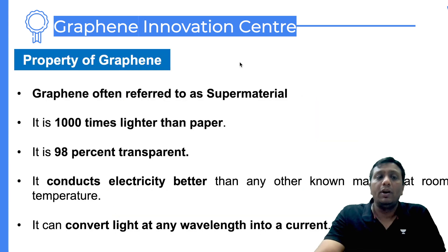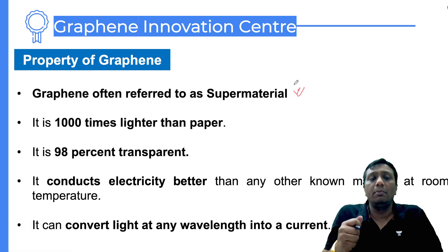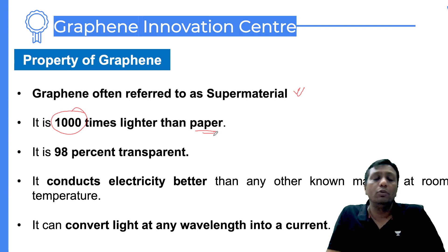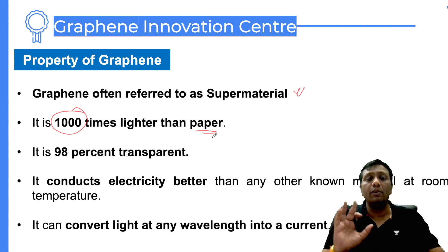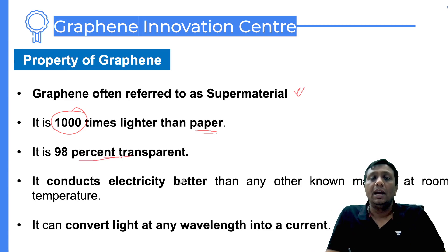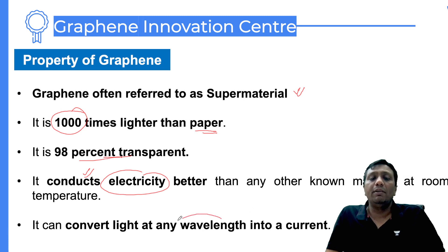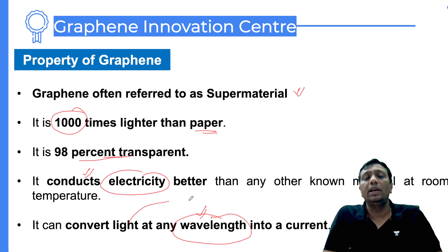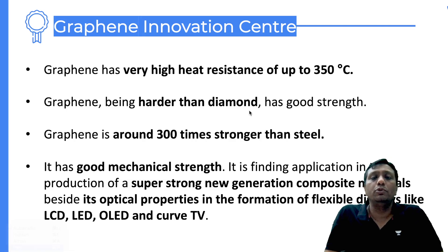Graphene is referred to as a super material - a very strong material - even a thousand times lighter than paper. It is 98 percent transparent. The best property is that electricity passes through graphene, so it has electrical conductivity at normal room temperature. Graphene can convert light at any wavelength into current. So they have the property of converting light into current.